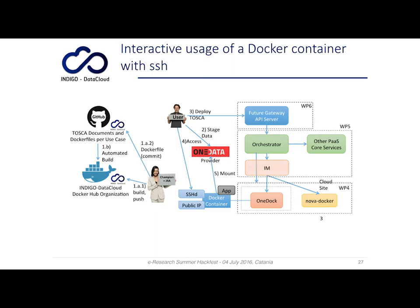From the user perspective, the first step is the deployment of the Tosca template through the web portal provided by WP6 of Indigo. As a preliminary step, the user can stage in the data needed by the application using OneData — via the OneData client web UI or command-line client — storing the application data inside their data space so that it will be available to the application.